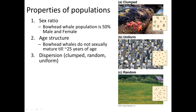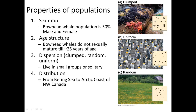Dispersion — are they clumped, random, or uniform? Here we have a clumped group of sea stars. Here's a uniform spacing between penguins, due to them nesting their eggs. Or random, which depends on dispersal. Bowhead whales live in small groups or are solitary, so they have usually a random to clumped dispersion. Their distribution is from the Bering Sea to the Arctic coast northwest of Canada, at least for the population I studied.